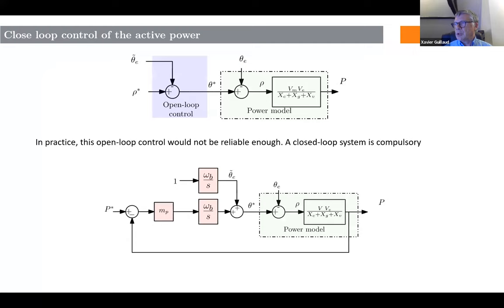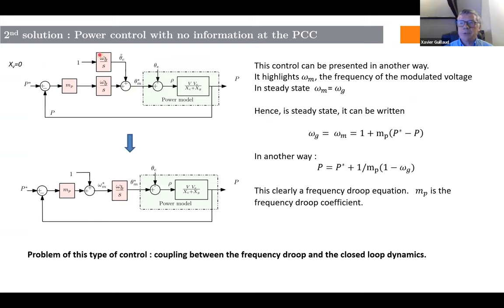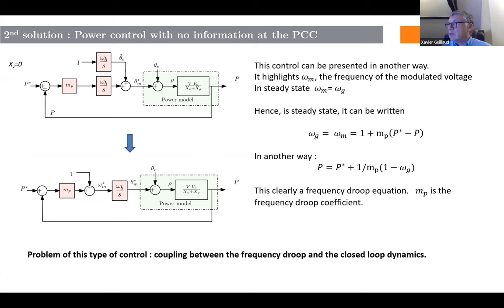Now it is time to close the loop, because it is not possible to control the system with such a simple open-loop control. Starting from this model, if I want to control the active power the very basic solution is to add an integrator. Modifying this scheme slightly gives a very well-known droop control. This is the way I explain the origin of droop control, really starting from scratch from the system model. We can add a filter if desired, but this is the very basic scheme of droop control.